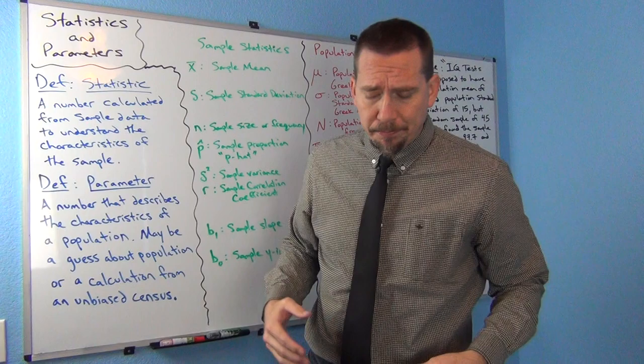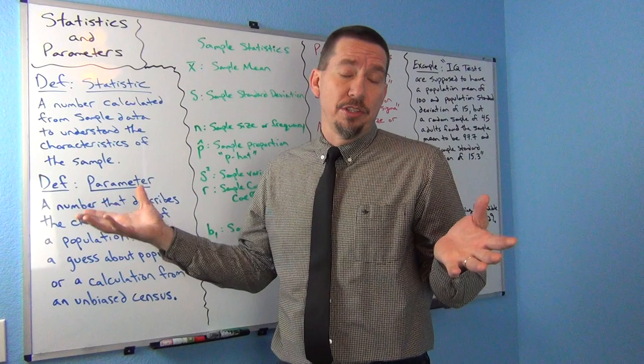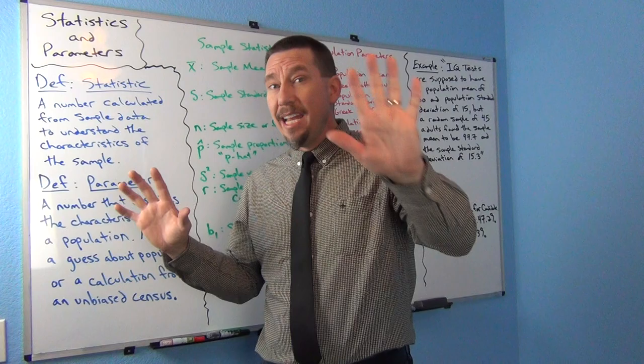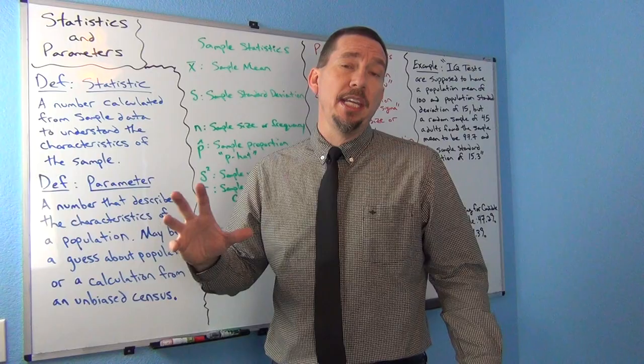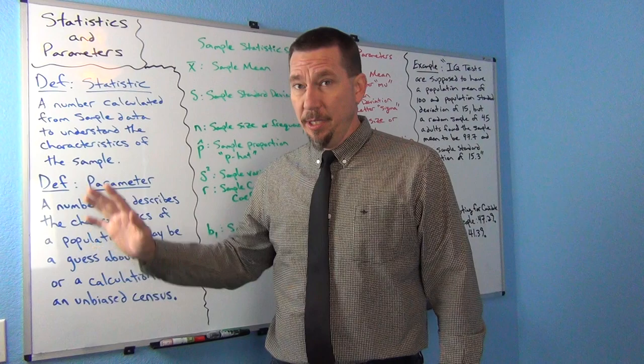Because of that dynamic, in stats we usually have two different letters for just about everything. I need a letter that represents the sample mean — the mean of maybe 50 people in my sample — but also a letter that represents the population mean, the mean of all the millions of people in my population.